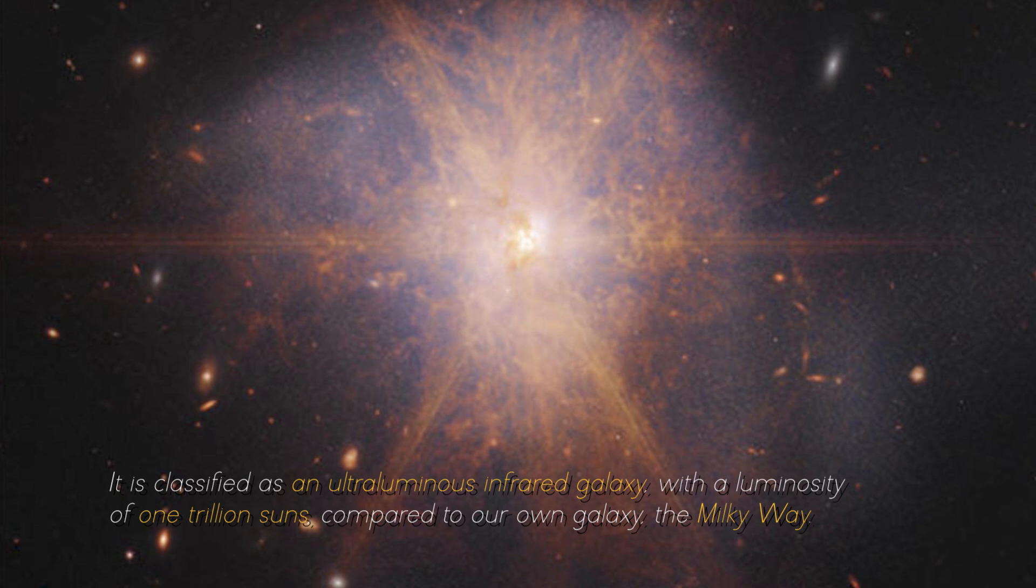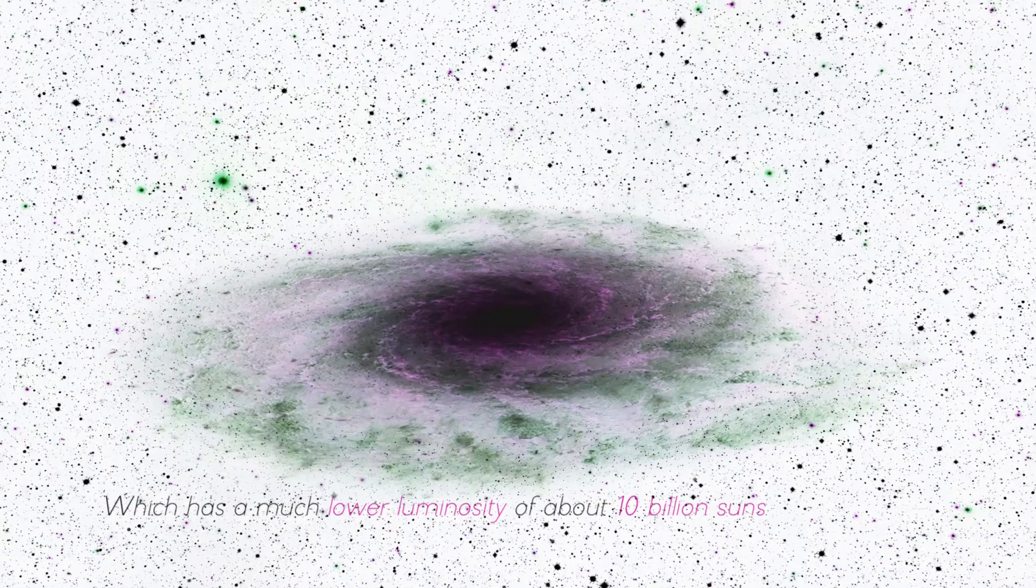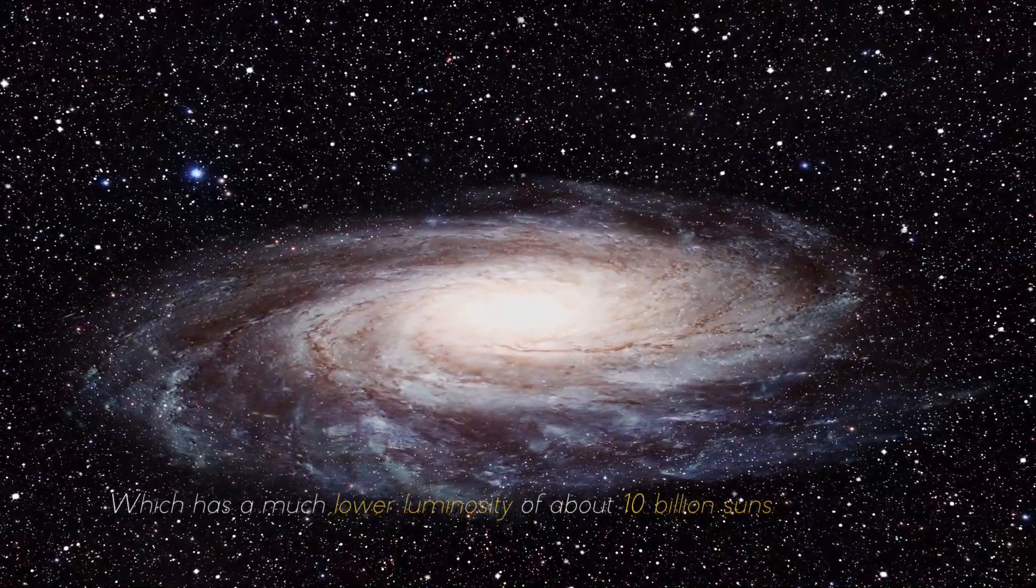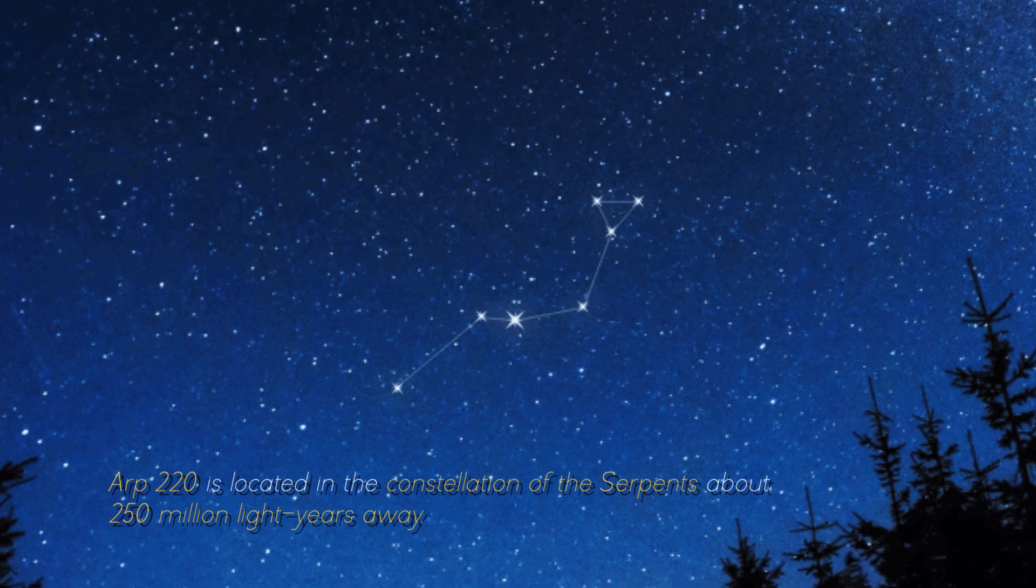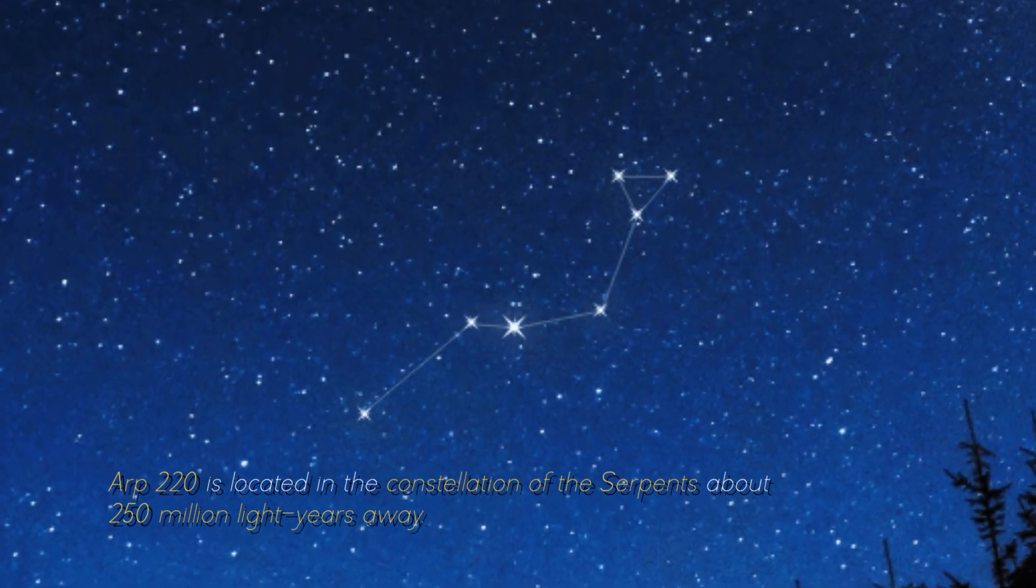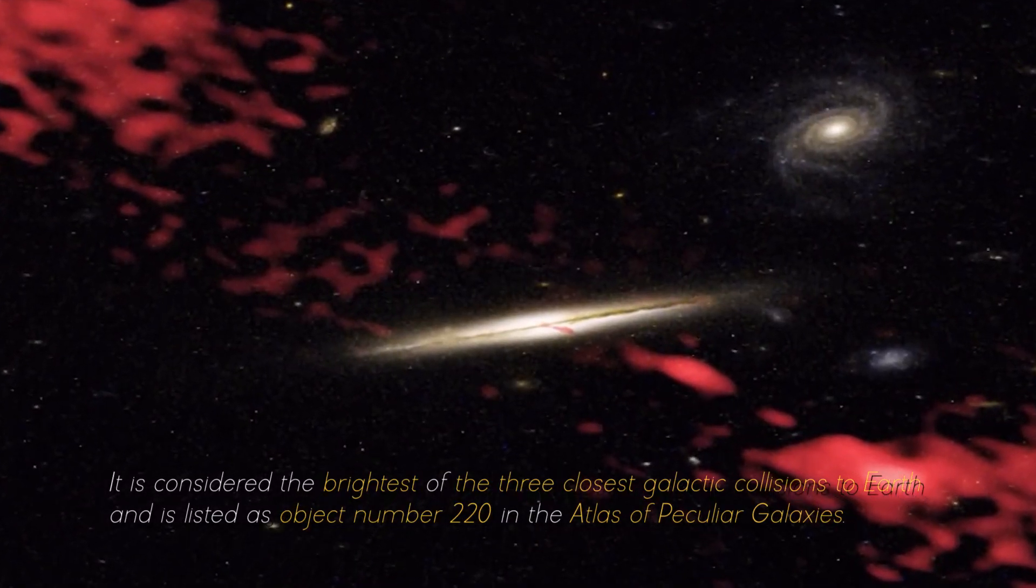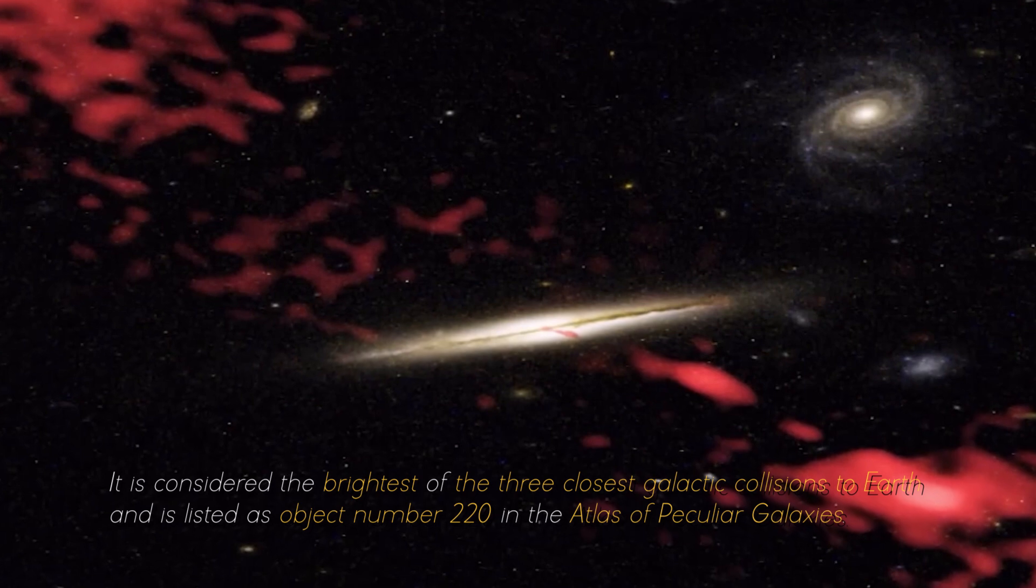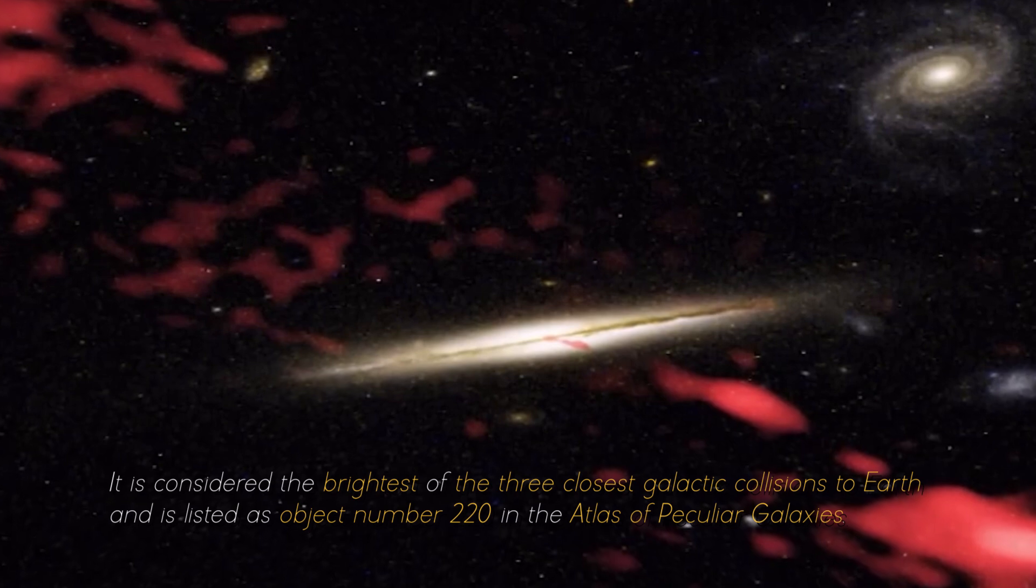With a luminosity of 1 trillion suns compared to our own galaxy, the Milky Way, which has a much lower luminosity of about 10 billion suns. ARP 220 is located in the constellation of the Serpents, about 250 million light years away. It is considered the brightest of the three closest galactic collisions to Earth and is listed as object number 220 in the Atlas of Peculiar Galaxies.